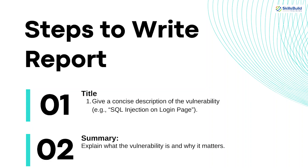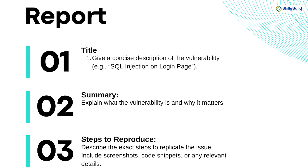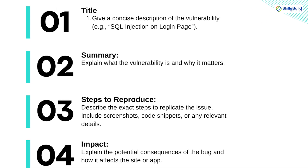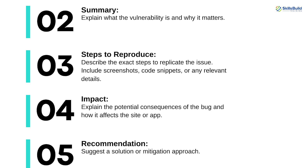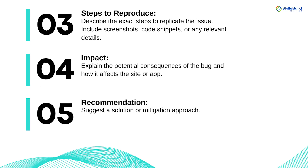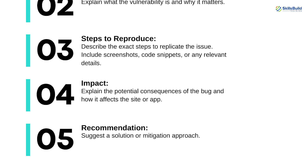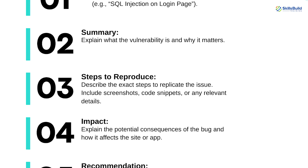Reporting vulnerabilities effectively: once you find a vulnerability, the next step is writing a report that clearly and professionally explains the bug. Here's a quick outline: Title — give a concise description of the vulnerability, e.g. SQL injection on login page. Summary — explain what the vulnerability is and why it matters. Steps to reproduce — describe the exact steps to replicate the issue, including screenshots, code snippets, or any relevant details. Impact — explain the potential consequences of the bug and how it affects the site or app. Recommendation — suggest a solution or mitigation approach. Effective reporting is key to building credibility in the bug bounty community, so practice clarity and precision.